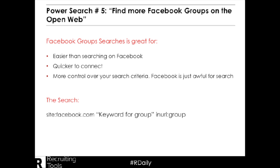What the search looks like is site:facebook.com — that's going to make sure that you're looking just at Facebook. When you're doing this search, make sure that you're looking at these three parts. We want to make sure that we're targeting Facebook. You're going to add your keyword, and remember that line that goes up and down means OR. So you can add more than one keyword, and we need to have the group piece.